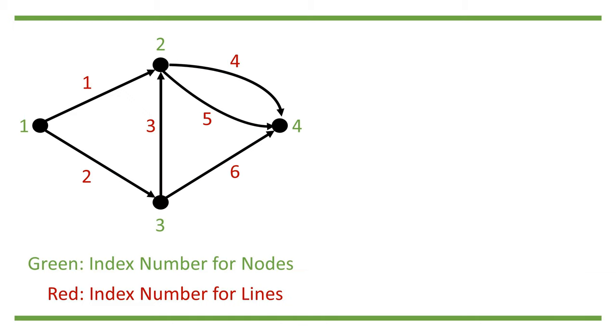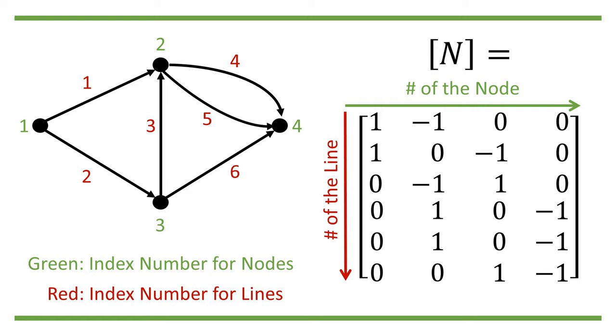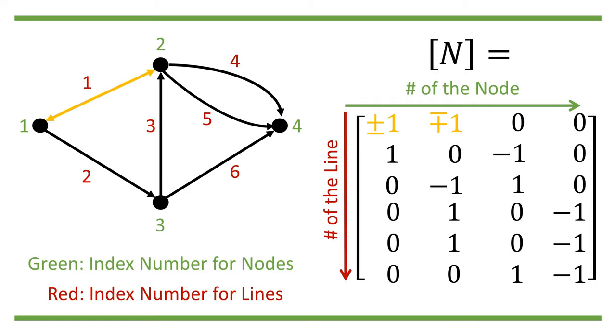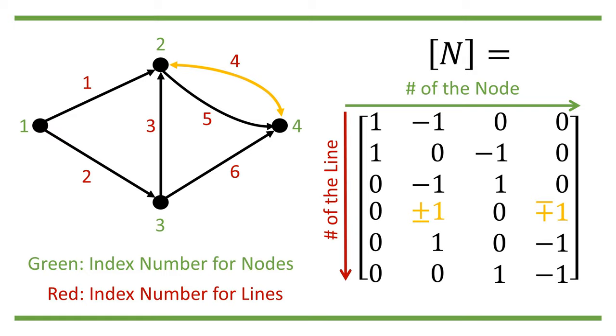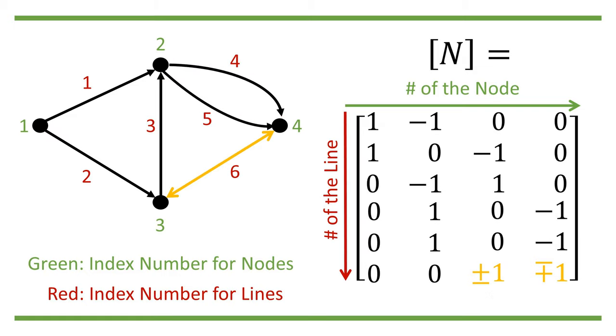For example, we can represent the topology of this grid as the incidence matrix shown, and we can swap the minus 1 and 1 for any pair of starting and ending points of the lines.